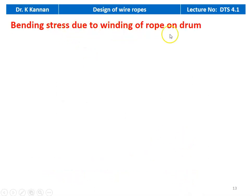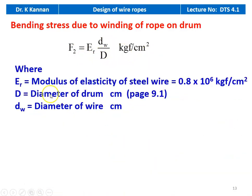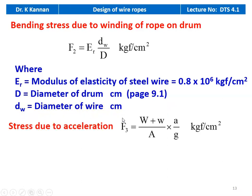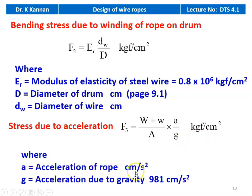Then calculate the stress on the wire rope. First, direct stress due to the load to be lifted and weight of the rope: F1 = (W + w) / A in kgf/cm², where W is the weight to be lifted in kgf, w is the weight of the rope in kgf, and A is the net cross-sectional area of the rope in cm². Second, bending stress due to winding of the rope on the drum: F2 = E_R × D_w / D in kgf/cm², where E_R is the modulus of elasticity of the steel wire (normally 0.8 × 10⁶ kgf/cm²), D is the diameter of the drum (refer page 9.1 for D/d ratio), and D_w is the diameter of the wire in cm. Third, stress due to acceleration: F3 = [(W + w) / A] × (a / g) in kgf/cm², where a is acceleration in cm/s² and g = 981 cm/s².